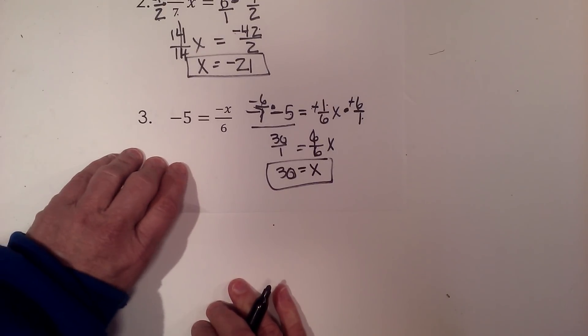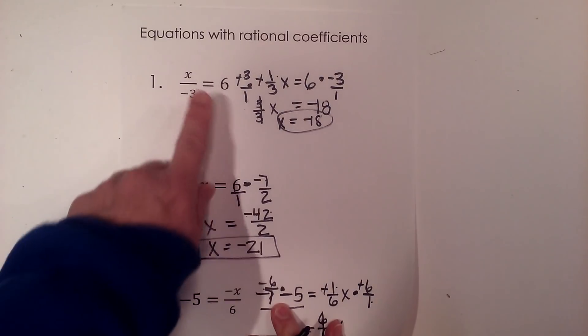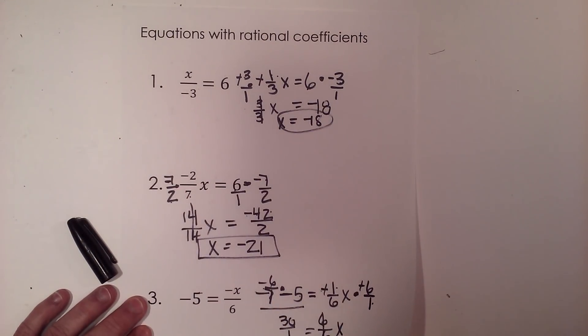So there you go. That is how you handle equations with rational coefficients. And in this case all three of these had negative coefficients.